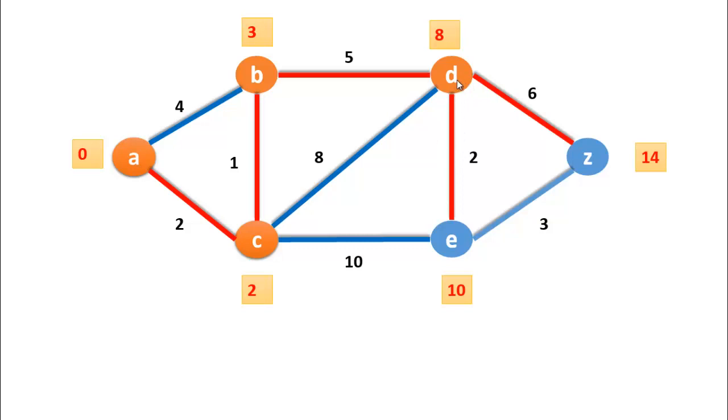Now from D we can move to node E, D to Z, and D to C. We will not traverse C because C is already traversed, so that's why we will move only E and Z.